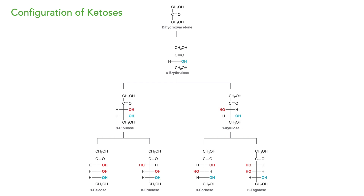This concludes the basic introduction to carbohydrates: the definition, D and L forms of sugar, aldoses and ketoses. In the next class, we will study the cyclic form of sugars. Thank you for watching.